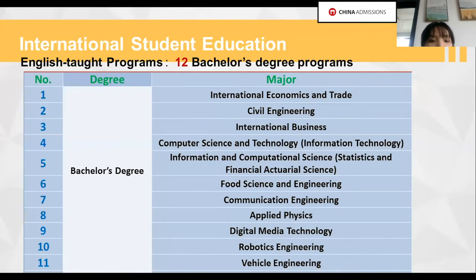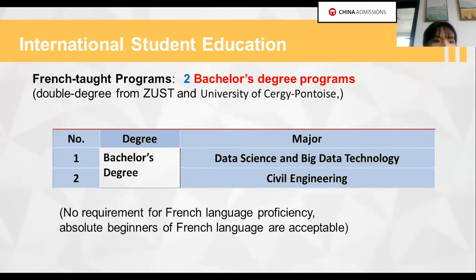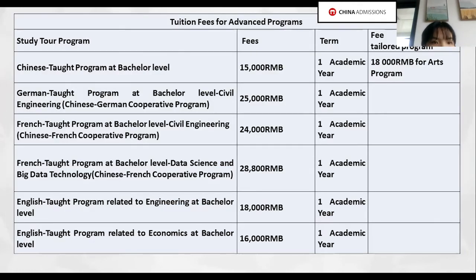We also offer different kinds of scholarships, which I will introduce later. We also offer German-taught programs in civil engineering, with no requirement for German language proficiency. Similarly, the French-taught program in data science and big data technology also has no requirement for French language proficiency. Apart from English, German, and French taught programs, we also have some distinctive programs for international students.